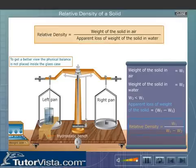The relative density of the solid is calculated using the formula: relative density is equal to weight of the solid in air divided by apparent loss of weight of the solid in water.